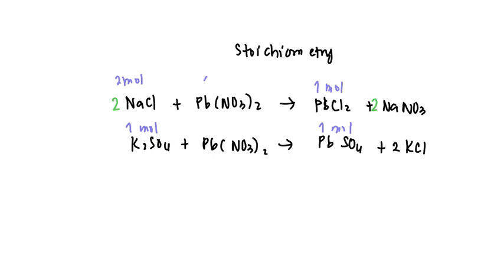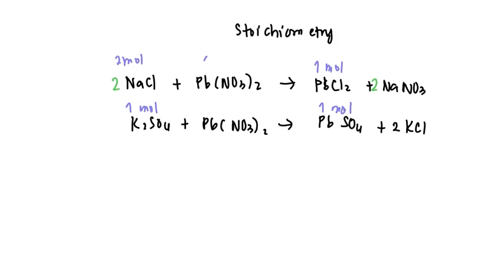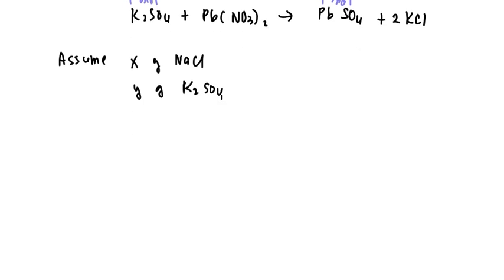Let us assume x grams of NaCl in the mixture and y grams of K2SO4. As given, the mass of the mixture of these two salts is equal to 10 grams, so x plus y equals 10.